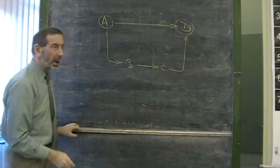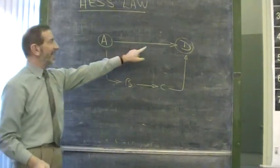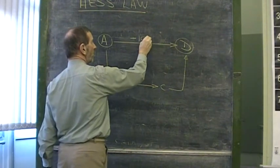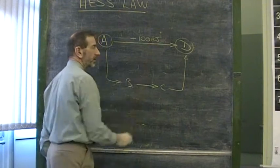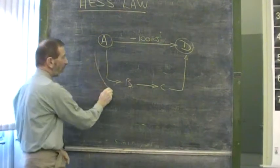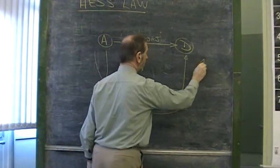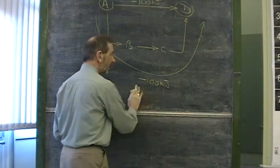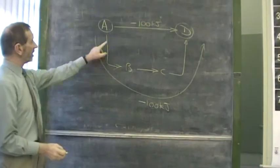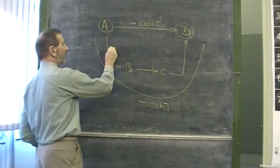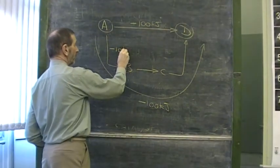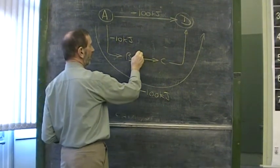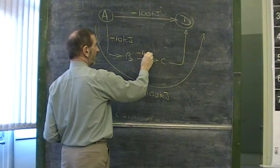So for example, let's say that going from A to D produces an enthalpy change of minus 100 kJ. Then going by this route would also add up to minus 100 kJ. Let's say for example that this step AB has a value of minus 10 kJ. Let's say that the BC step has a value of minus 40 kJ.